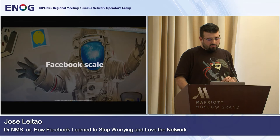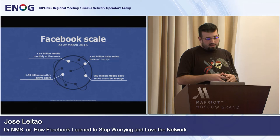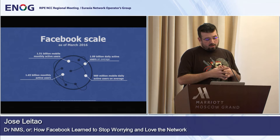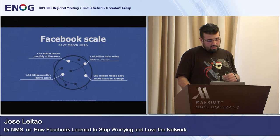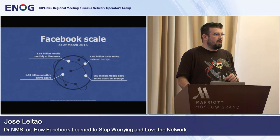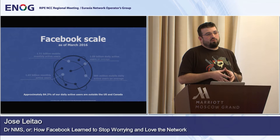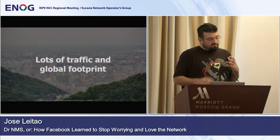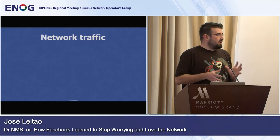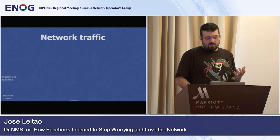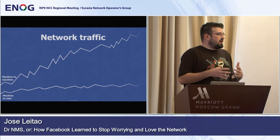Let's talk about Facebook scale. These numbers are recent as of March of this year. The most interesting two are our mobile monthly actives at 1.5 billion, and our complete monthly actives at 1.6 billion. More than 84% of those are outside the US and Canada. For the Facebook network, this means lots of traffic and a global footprint. We have two types of traffic: machine-to-machine and machine-to-user.